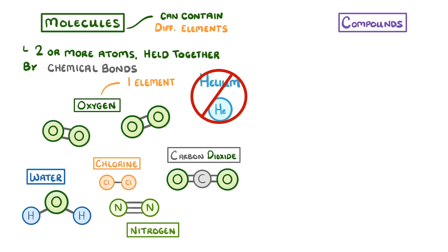Compounds meanwhile are substances that contain two or more different elements. And again, the atoms are held together by chemical bonds. So if we look at our molecules, a lot of these will also be compounds, because they contain two or more different elements.